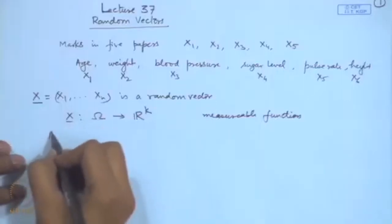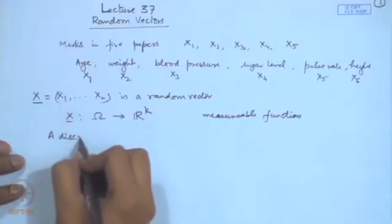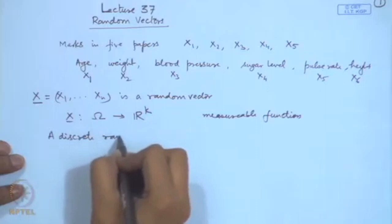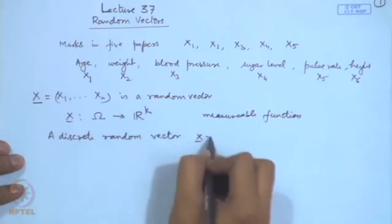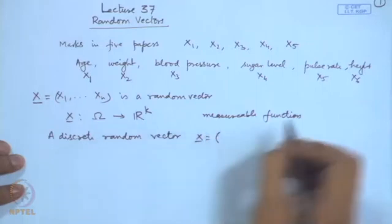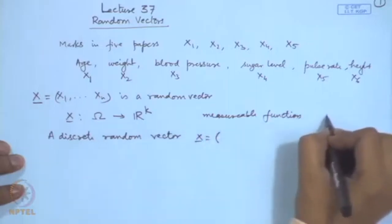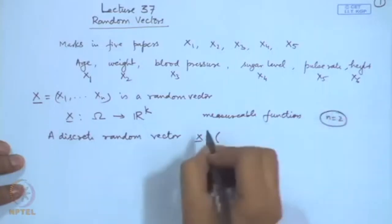In that case the distribution of the random vector is described differently. Let us take two special cases: one when all the components are discrete, and second when all the components are continuous. We consider a discrete random vector X, restricting attention to two dimensions (n=2). So (X, Y) is also called a bivariate random variable.